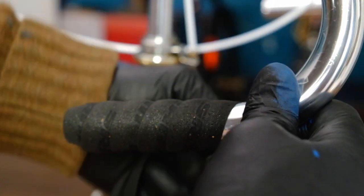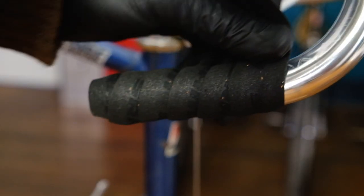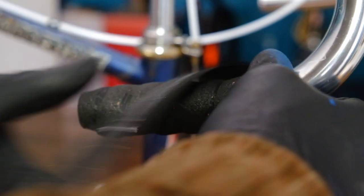Continue winding the tape snugly around the bars, overlapping each shingle by about a third. I try to make sure the adhesive is in contact with the bars themselves, not the tape.